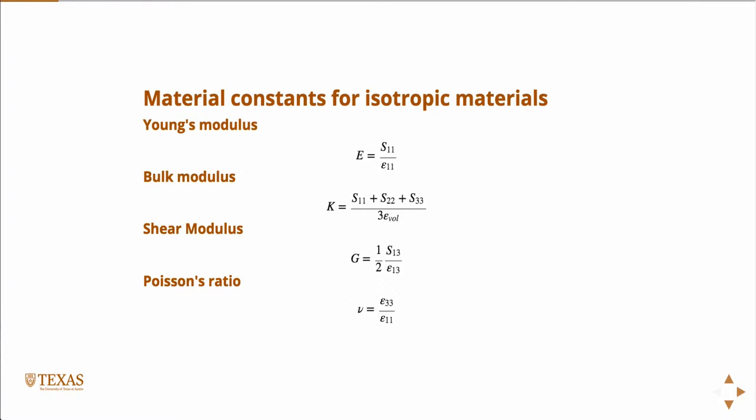So now we're starting to get into the relationship. Material constants are what relates stress to strain. If we can measure the strain and we know the material property, then we can figure out what the stress is. We have quite a few of them, and for isotropic materials there's relationships between all of them.